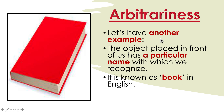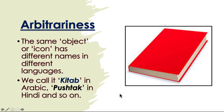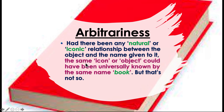Let's have another example. The object placed in front of us has a particular name by which we recognize it — it is known as 'book' in English. The same object has different names in different languages: we call it 'kitab' in Arabic, 'pushtak' in Hindi, and so on. Had there been any natural or iconic relationship between the object and its name, the same object could have been universally known by the same name 'book' — but that's not so.